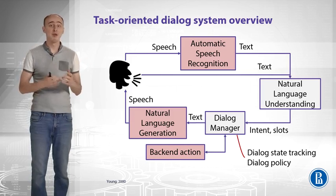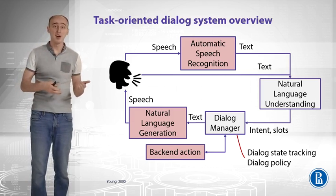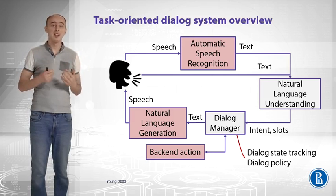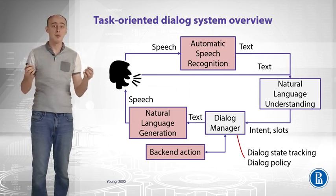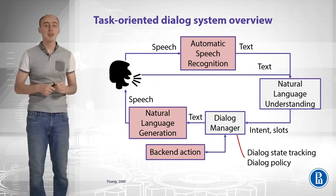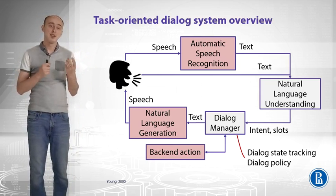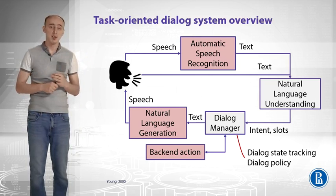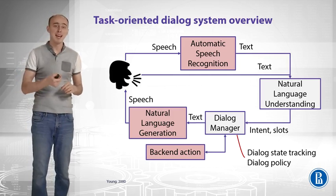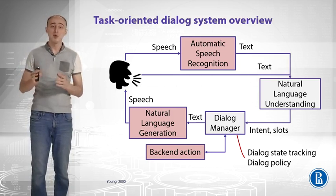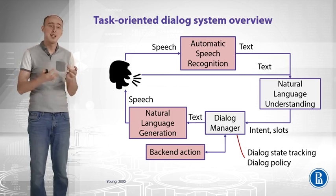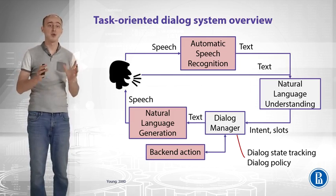We get the speech from the user and we can convert it to text using ASR, or we can get text like in chatbots. Then comes natural language understanding that gives us intents and slots from that natural language. Then there is a magic box called Dialog Manager, and it actually does two things: it tracks the dialogue state and it learns the dialogue policy — what should be done and what the user actually wants.